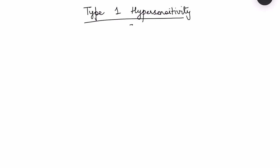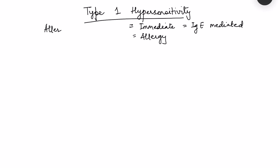Type 1 hypersensitivity reaction, also known as immediate hypersensitivity reaction or IgE-mediated hypersensitivity reaction, because IgE antibody is the main mediator. In common terms it is also known as allergy. It is the most common type of hypersensitivity reaction to an external antigen, also known as an allergen, because the body gets sensitized to this antigen.